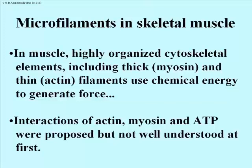Muscle is an example of highly organized cytoskeletal elements, which include not only actin, but the very much thicker filaments called myosin. Between the two of them, thick and thin filaments, or myosin and actin, these use the chemical energy of ATP hydrolysis to generate force.